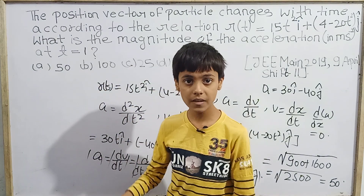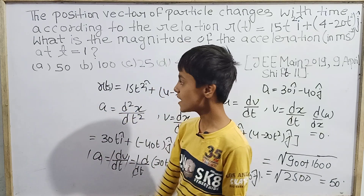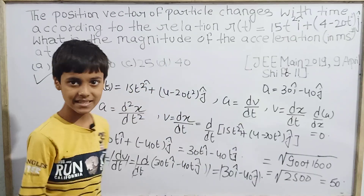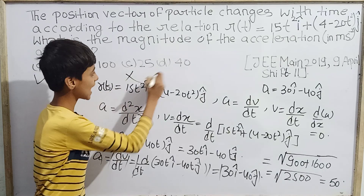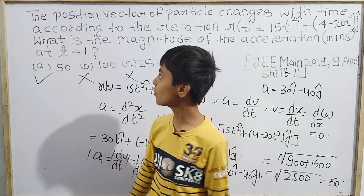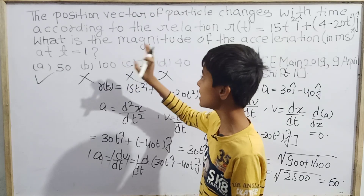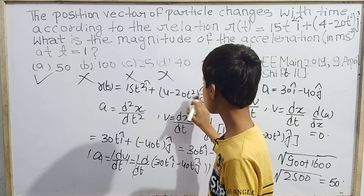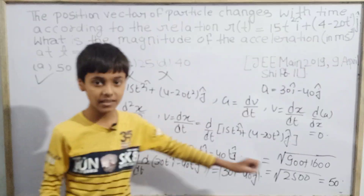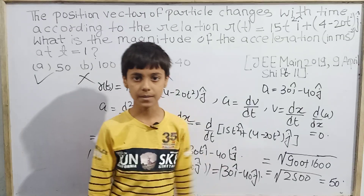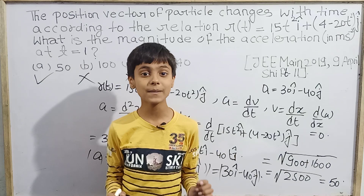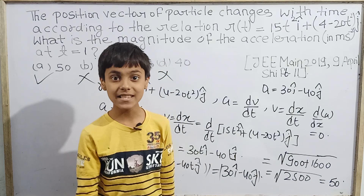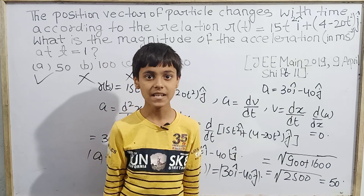So option A — 50 m/s² — is the correct answer, while options B, C, and D are wrong. For this particle whose position-time relation is r(t) = 15t² î + (4 − 20t²) ĵ, the magnitude of acceleration is always 50 m/s². This was today's topic based on this kinematics question from JEE Mains 2019, April 9th, second shift. Thank you everyone.